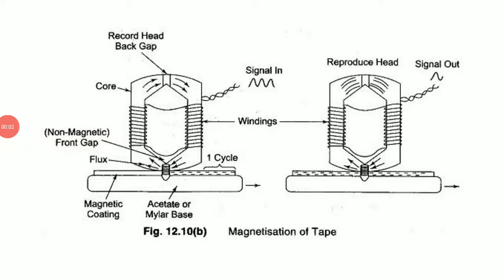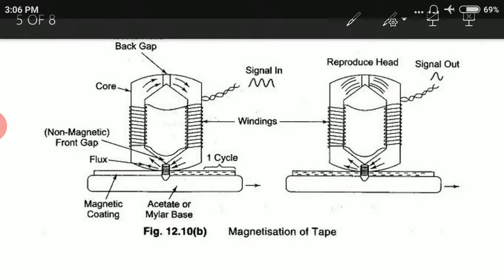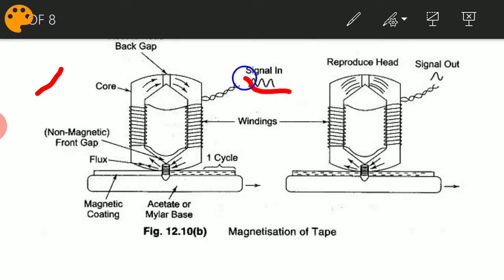Now let us look more into the working of the recording head and the reproducing head. In a recording head, the input signal is fed into a coil and the coil produces variations in magnetic flux along its core depending on the input signal. That is a basic law from electrodynamics — Faraday's law — whenever the voltage corresponding to a coil is varying, the magnetic flux associated with the coil will also be varying.